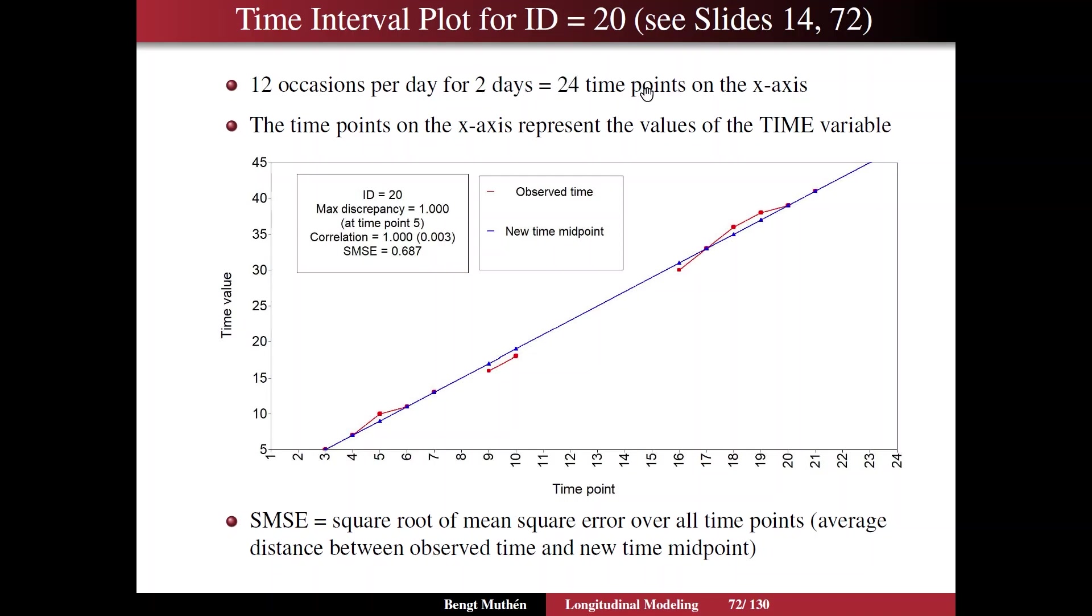We have 24 time points on the x-axis. And the time points on the x-axis represent the values of the time variable, the name that you give the variable, the time variable that's going to be used for the computations created by the t-interval option. That corresponds to the bin number that we talked about before, integer values 1, 2, 3, etc. Now in this plot you have observed time in red and the new time midpoint, which shows you the misalignments in blue.